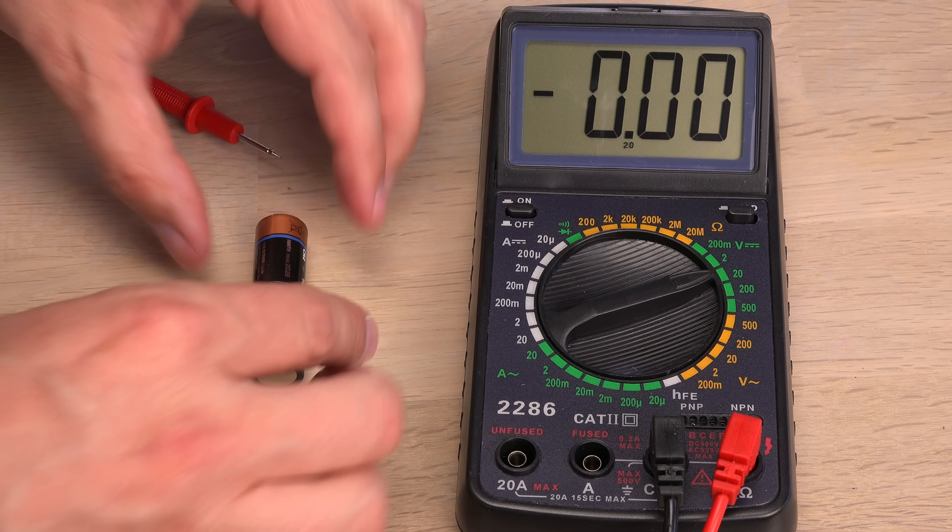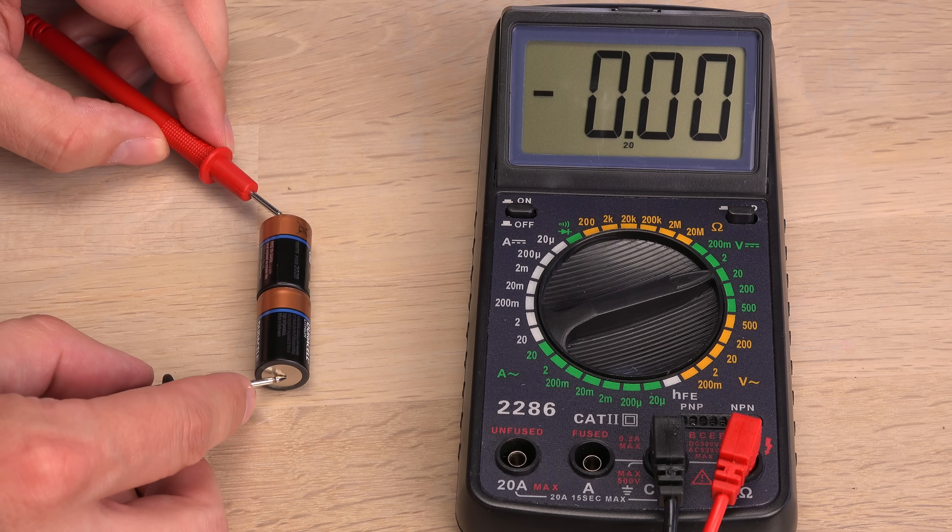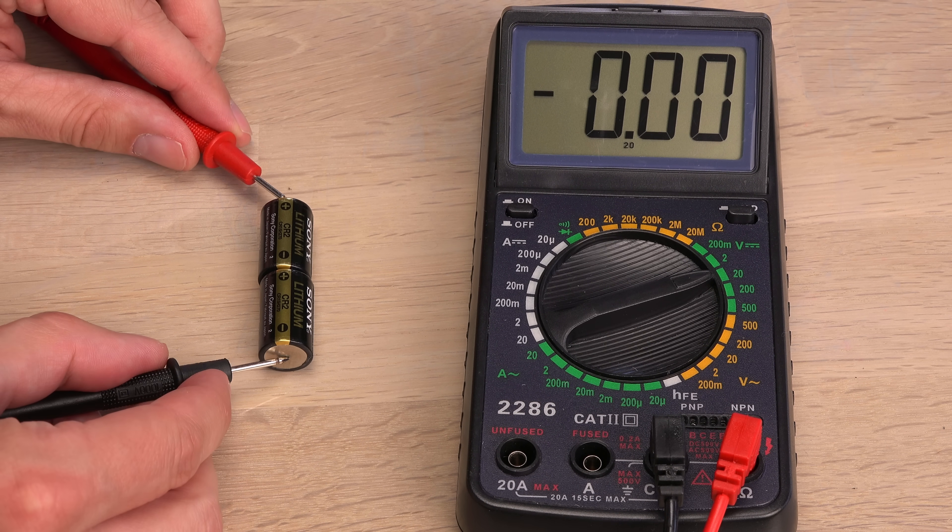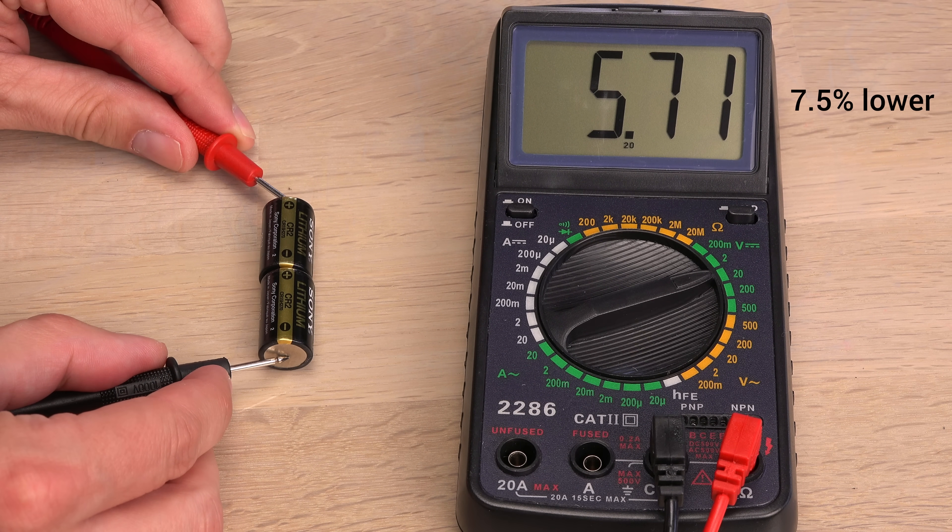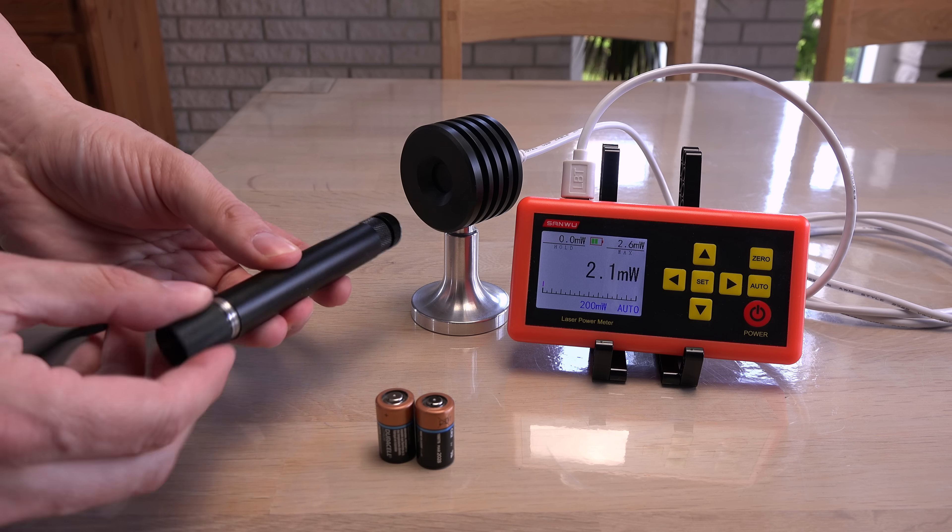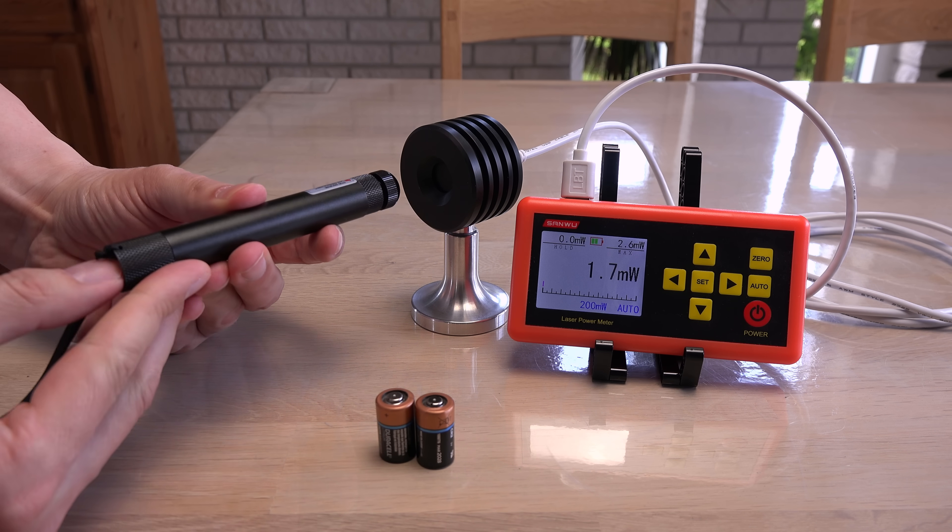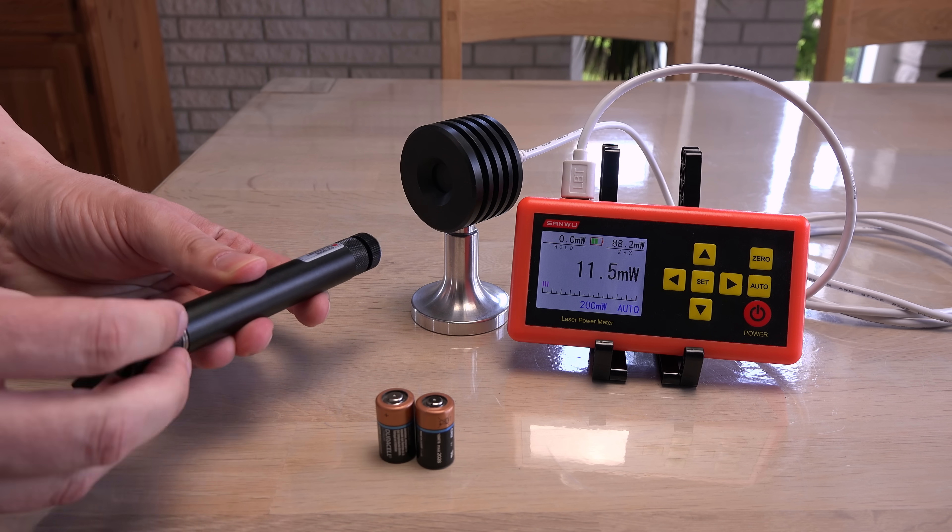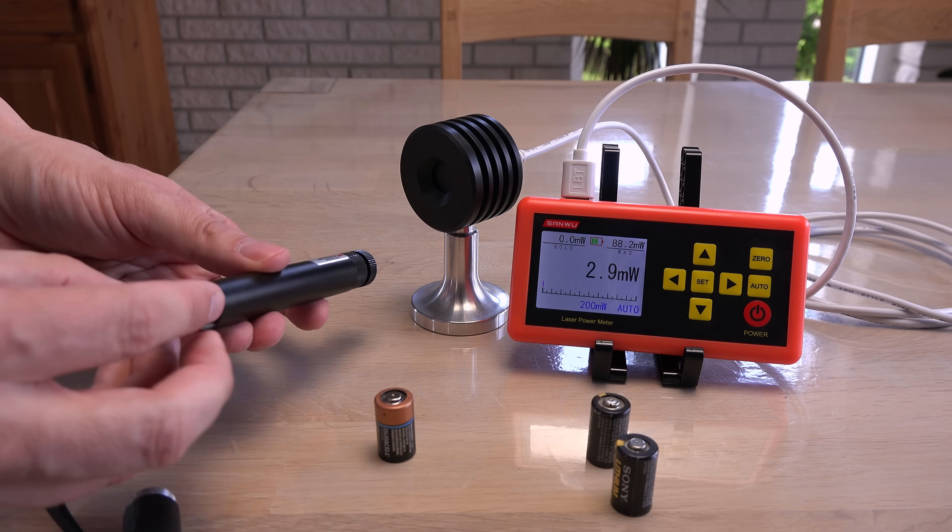The fresh batteries should be around 6 volts in series. Yep. The not-so-fresh batteries are 5.7 volts, well used. I will quickly test how much of a difference it makes in power output. Old batteries first, around 88 milliwatts when closer to the power head. Now the new batteries.